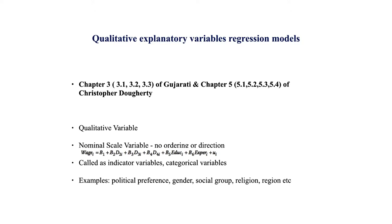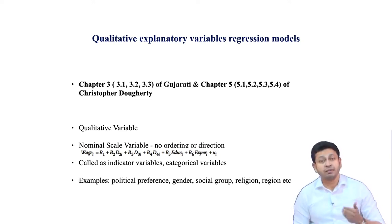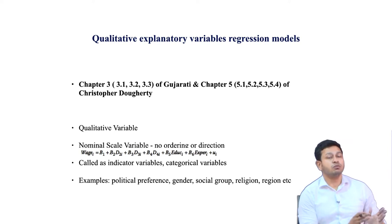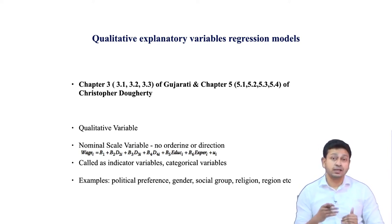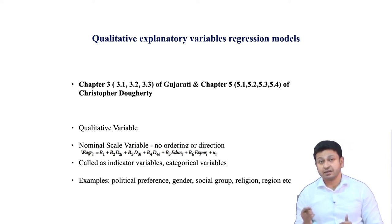In this lecture we will see how to include these variables in a regression equation, what the different types of dummy variables are, and what tests we might perform to understand which dummy variables to include. A qualitative variable is also called a nominal scale variable — there is no ordering, no direction. It is also called an indicator variable or categorical variable. Because of this qualitative nature, the impact of one dummy variable is always measured with respect to a reference dummy variable — a fixed category against which you compare other categories.